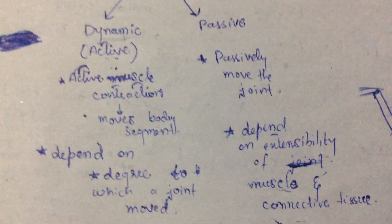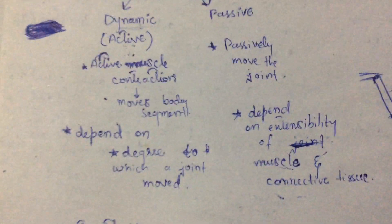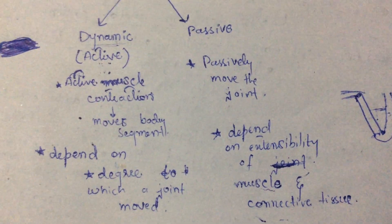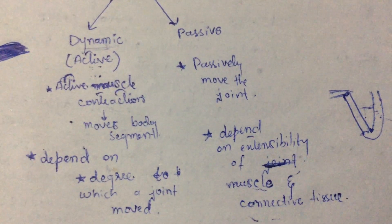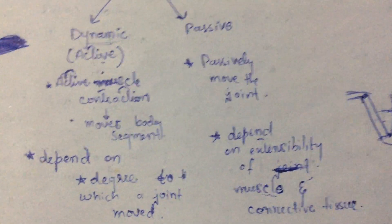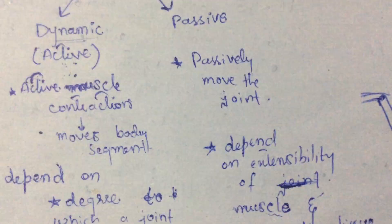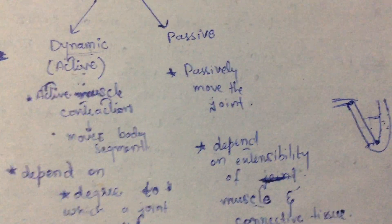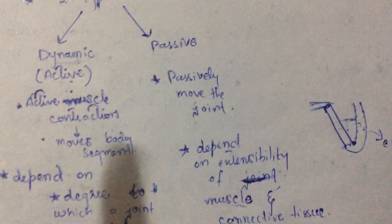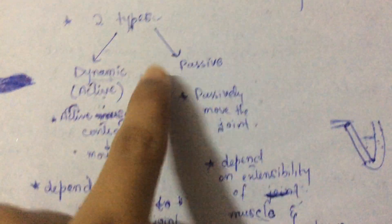Passive flexibility is also referred to as passive mobility and passive ROM. It is the degree to which a muscle can be passively moved through the available range of motion. It is dependent on the extensibility of muscles and connective tissue that surround the joint. In passive flexibility, the joint is moved through its available range by an external force rather than active muscle contraction. If extensibility increases, passive flexibility also increases.